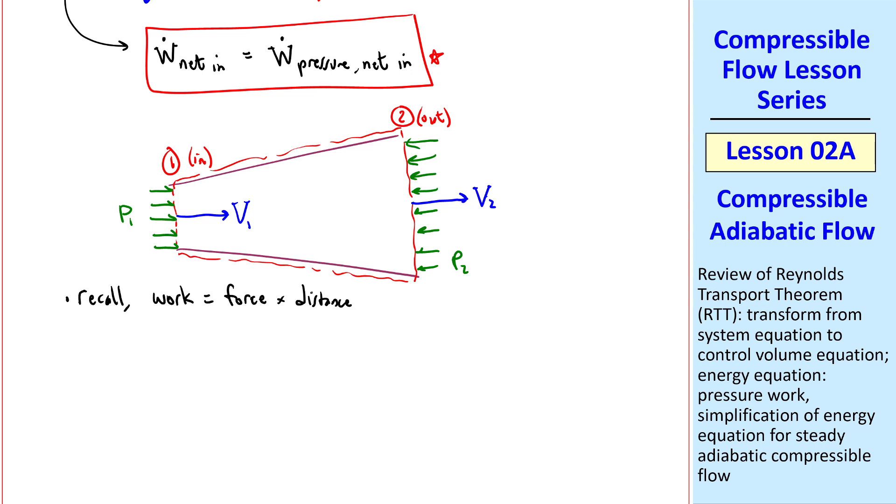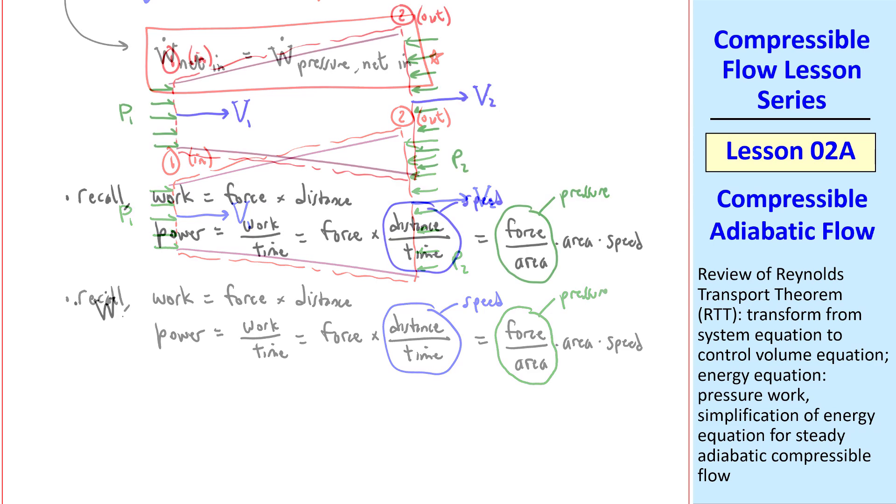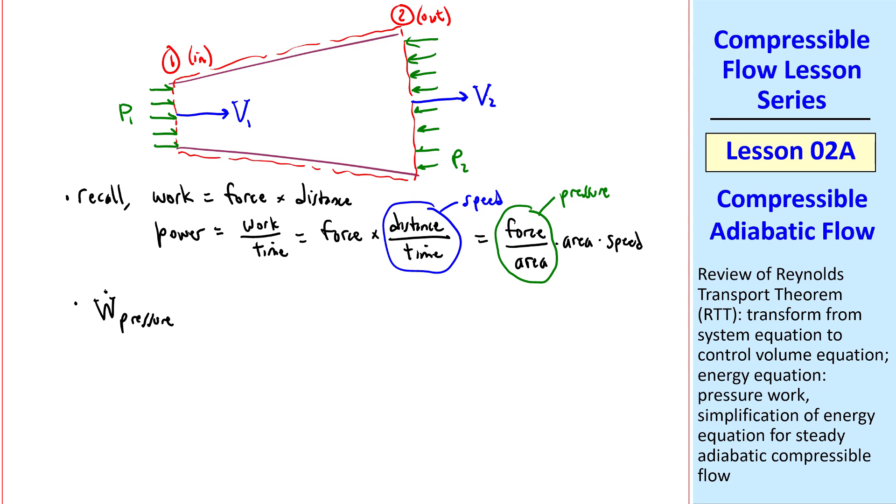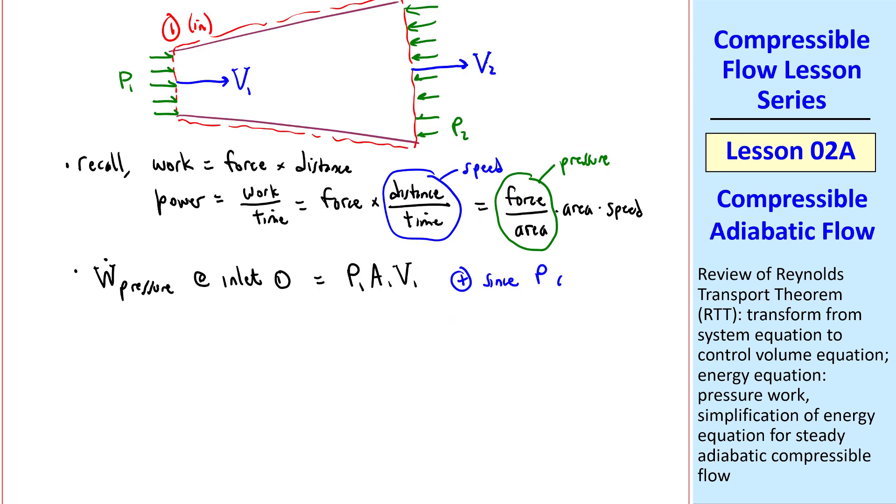So what is pressure work? Well, from fundamentals, work is force times distance, and power is work per time, so it's equal to force times distance per time. But distance per time is speed, so power is force, and I'll multiply and divide by area. So it's force per area times area times speed, and we do that because force per area is pressure. Thus, W dot pressure, the so-called pressure work term, which is really a power at inlet 1, is the pressure at 1 times the area at 1 times the speed at 1, P1, A1, V1. This term is positive, since pressure acts in the same direction as the flow velocity.